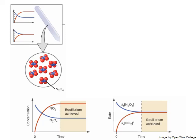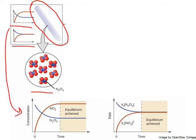Imagine a situation where we start out with just our reactant N2O4 in a sealed glass tube. N2O4 is a colorless gas, so it appears clear. The two graphs to the left represent the concentration of our reactant and product over time on top, and the reaction rates for the forward and reverse processes on the bottom, with larger blown-up versions shown for more detail.